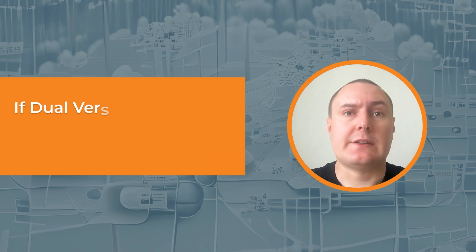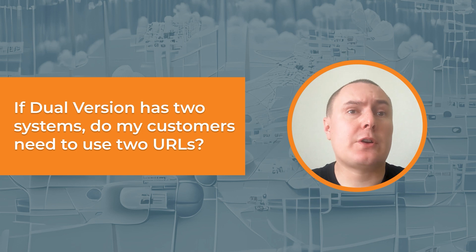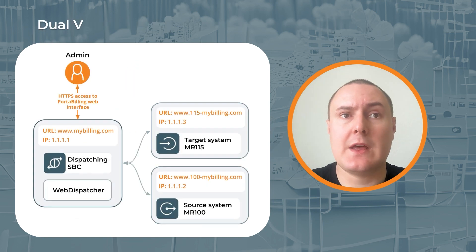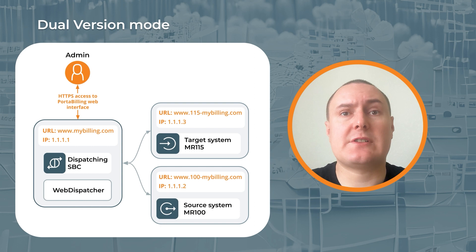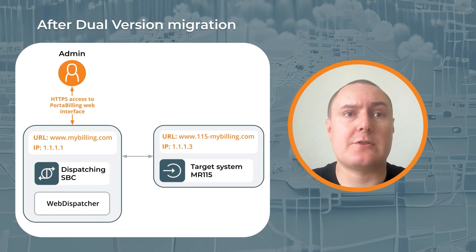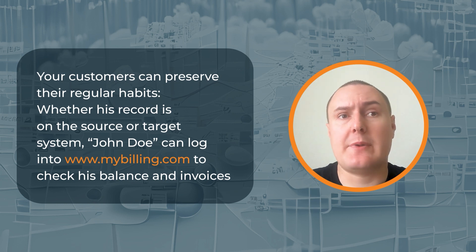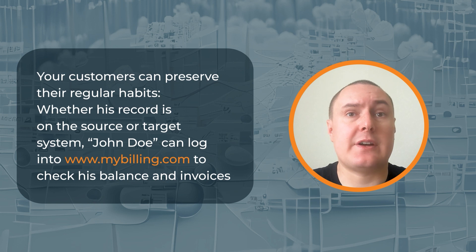If DualVersion has two systems, does it mean that my customers need to use two different URLs? If you have watched the earlier videos in this series, you already know that the DualVersion portal switch is a solution that enables telcos to perform smooth and controlled customer migration. To earn the title of smooth and controlled, this migration must ensure that your customers can log into the same portal under the same address regardless of whether they happen to be in your source or target system. So yes, your customers will always be able to preserve their regular habits. If I am a customer John Doe, I will log in to www.mybilling.com to check my balance and invoices, both when my record is on the source system and after it is moved to the target system. Later in this video, I will explain the mechanics of how DualVersion portal switch accomplishes this.